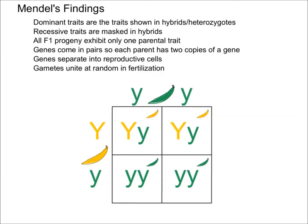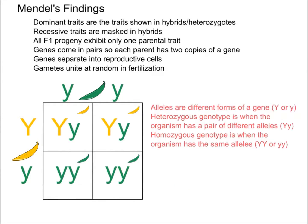During reproduction, the genes will separate into reproductive cells, and then the gametes will unite at random in fertilization.